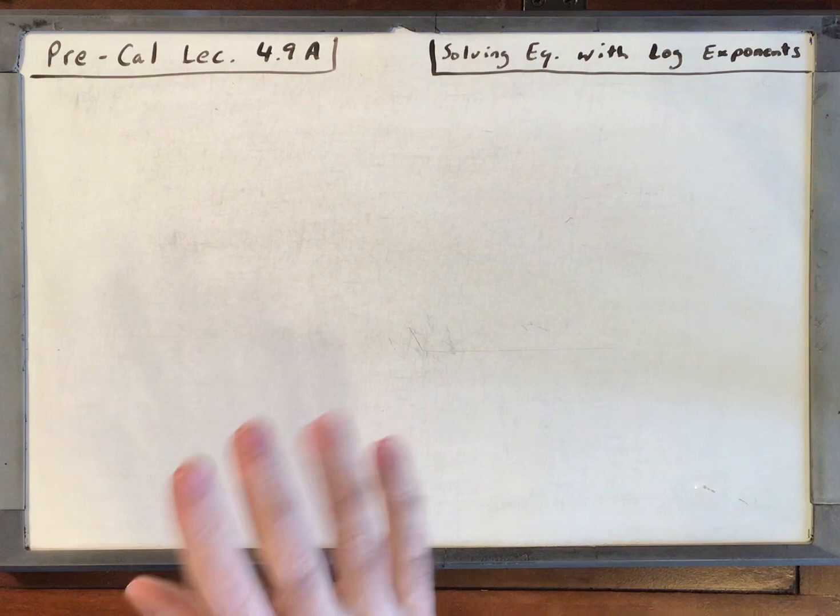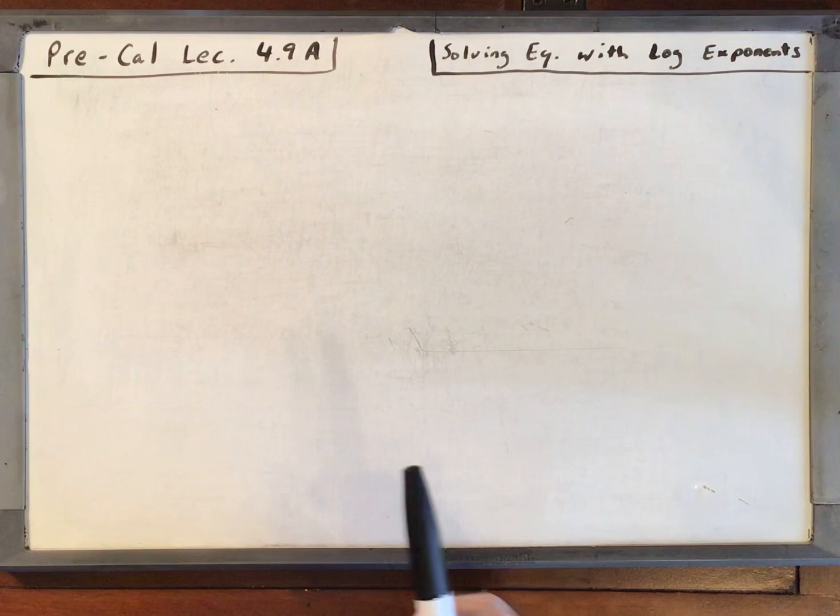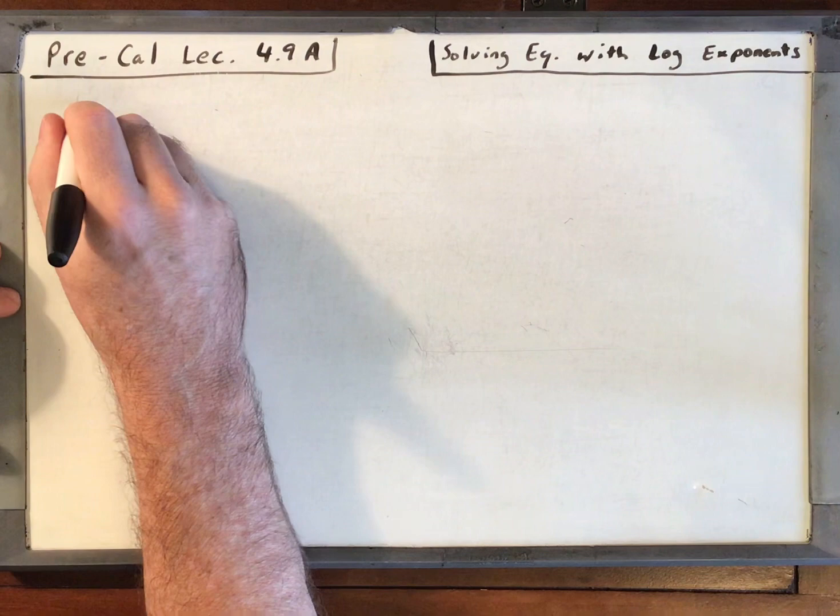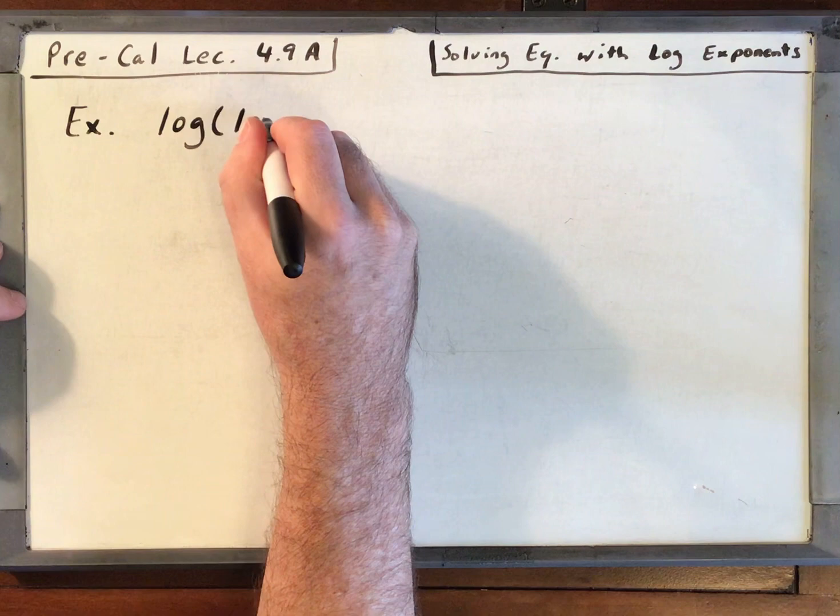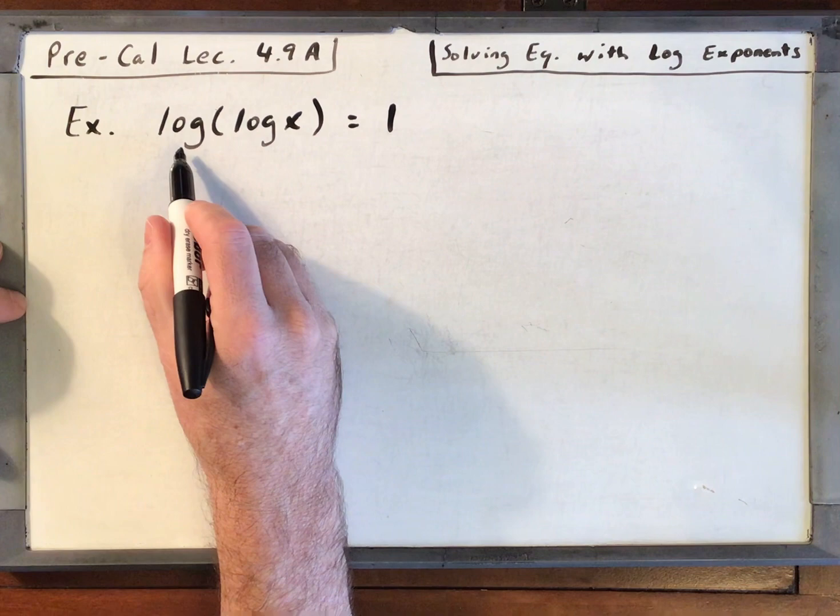Let's work on the next two examples. We've got a nested log. We have log base 10 of the log base 10 of x is equal to 1.